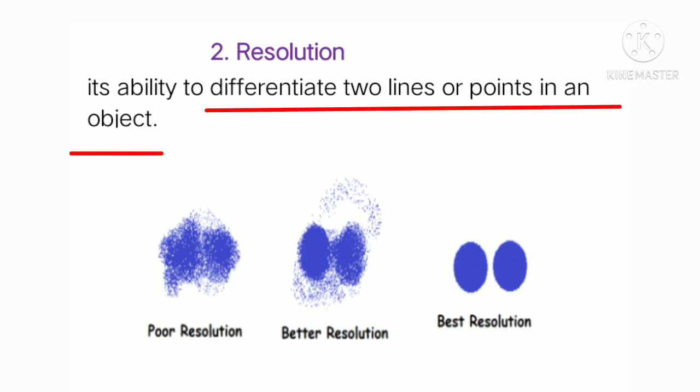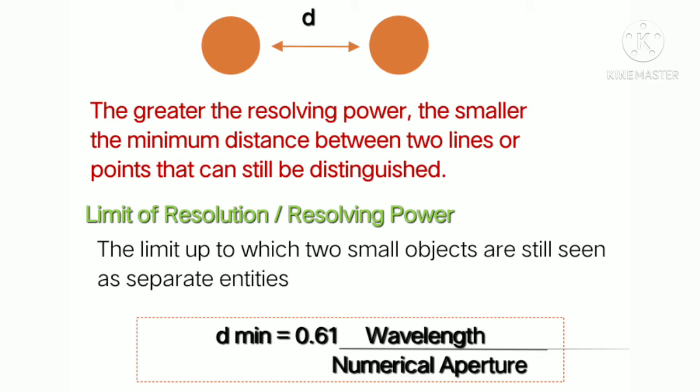Resolution is the ability to differentiate two lines or points in an object as distinct entities. In an image with poor resolution, you can barely distinguish two points as different entities. With better resolution you can identify something is different, and with the best resolution you can clearly see two distinct circles. The minimum distance between two points determines resolution — the smaller the distance, the greater the resolution.